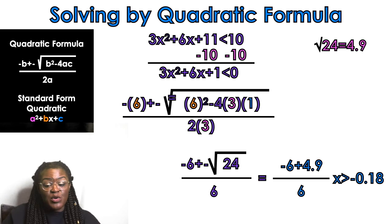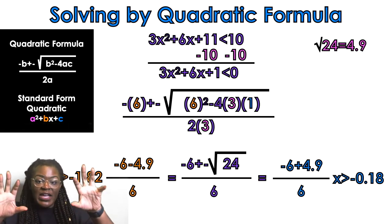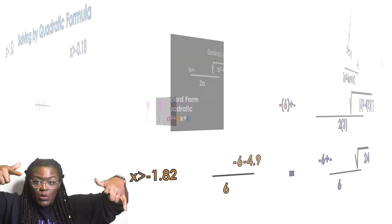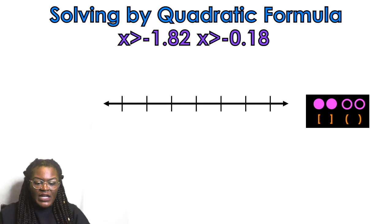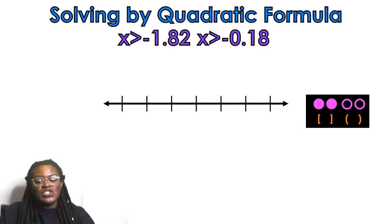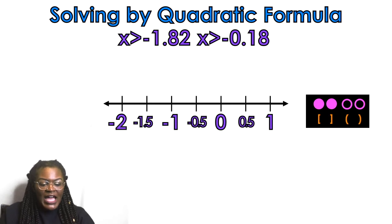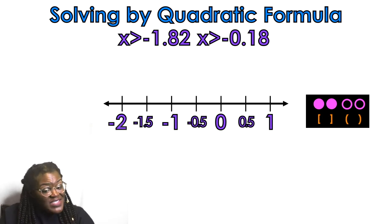Separating the two solutions: negative 6 plus 4.9 gives x greater than or equal to negative 0.18, and negative 6 minus 4.9 over 6 gives x greater than negative 1.82. I take both answers to the number line. This time the number line goes from negative 2 to 0.5 in increments of 0.5 since the values are close together.